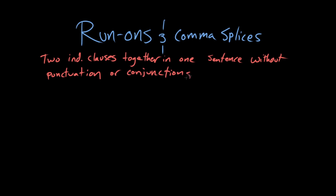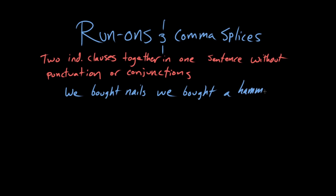So Rosie, what is a good example of a run-on sentence? We bought nails, we bought a hammer. Yeah, so we can see that this sentence contains two individual independent clauses. So we've got number one: we bought nails. Number two: we bought a hammer.